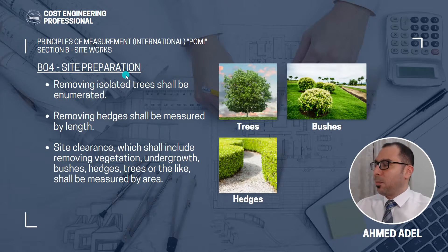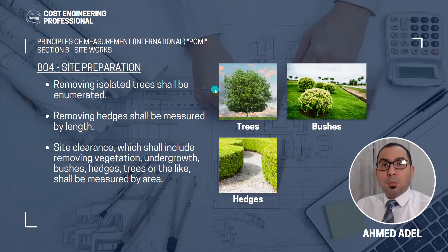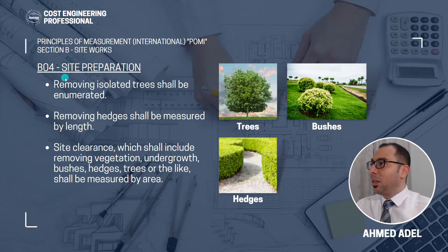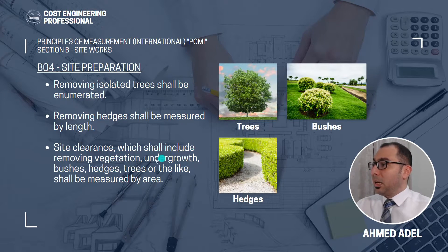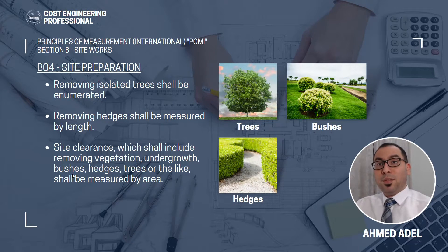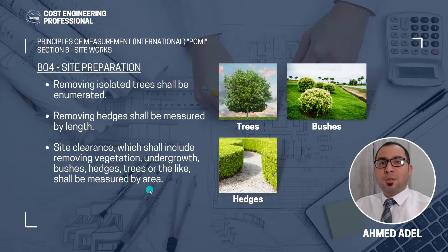Subsection four is site preparation. Removing isolated trees shall be enumerated — you have to count them and keep an item in the BOQ. Removing hedges shall be measured by length in linear meters. Site clearance, which includes removing vegetation, undergrowth, bushes, hedges, trees or the like, shall be measured by area — so if it's a complete area with everything included, it has to be measured by area.